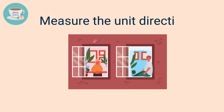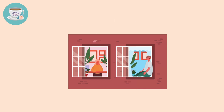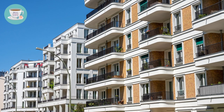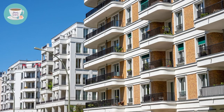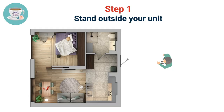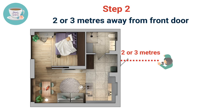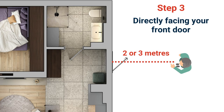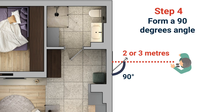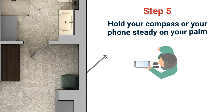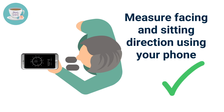Next, we need to measure the directions of your unit. We use exactly the same steps, but this time you need to stand outside your unit's front door — two or three meters away, directly facing your front door, and form a 90-degree angle. Using the same method, we can now measure the sitting direction of your unit.